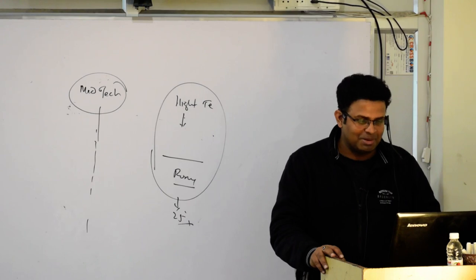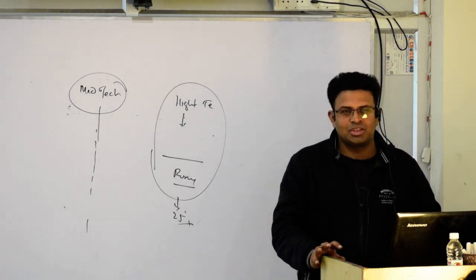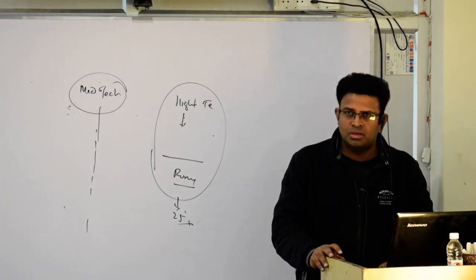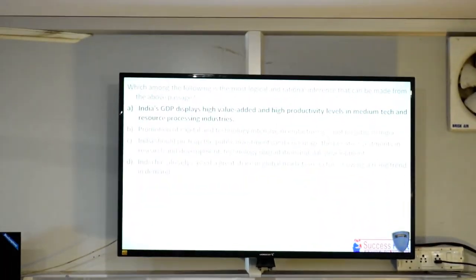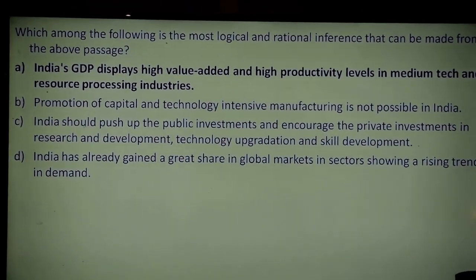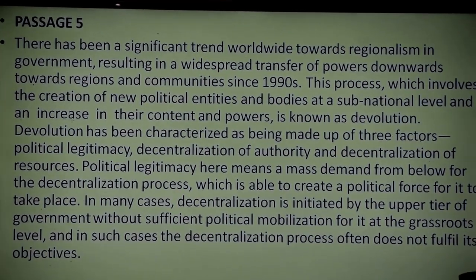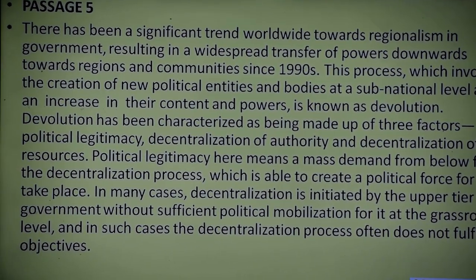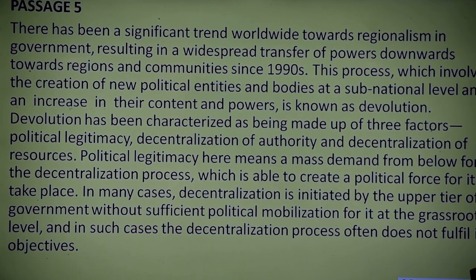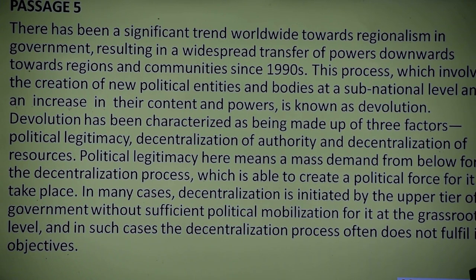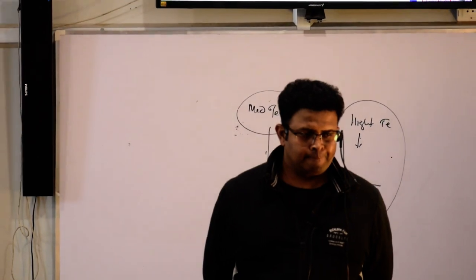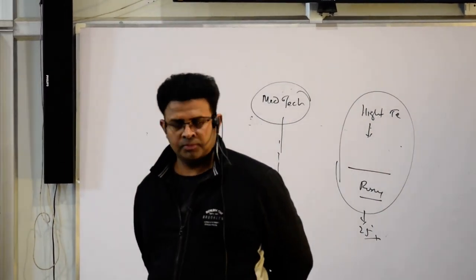Option D says India has already gained a great share in the global market in sectors showing a rising trend in demand — this too is not stated in the passage. So after cancelling the wrong options, you are left with the correct one. Always remember: out of context options are what examiners use to trap you, and that awareness will help you clear even CAT-level questions. Now read the fifth passage and answer it carefully.